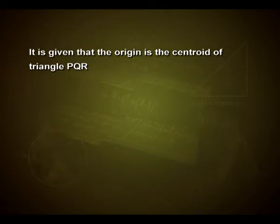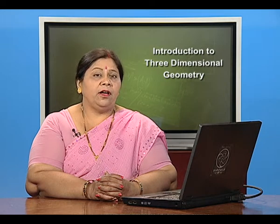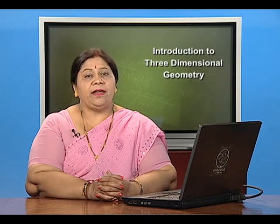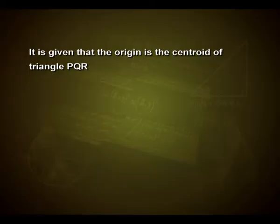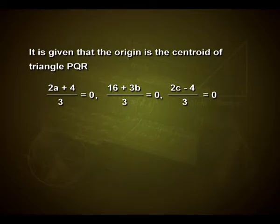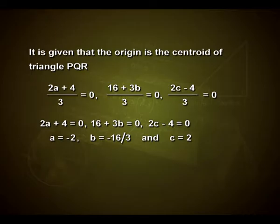It is given that the origin is the centroid of triangle PQR. Equating the coordinates of x, y, and z, we get 2a+4 = 0, 16+3b = 0, and 2c−4 = 0, which on solving gives a = −2, b = −16/3, and c = 2.